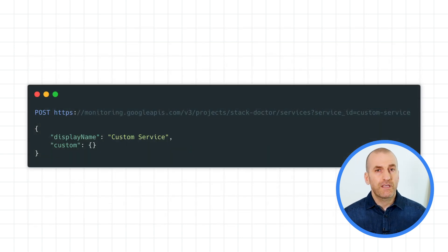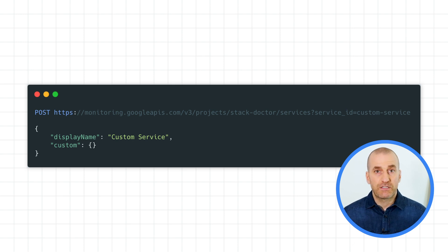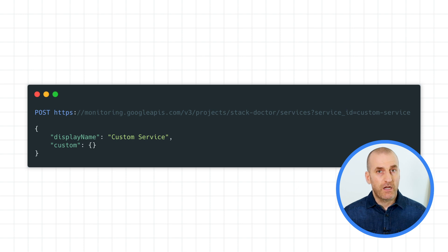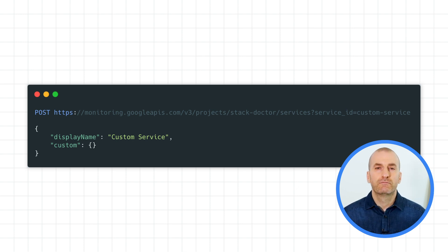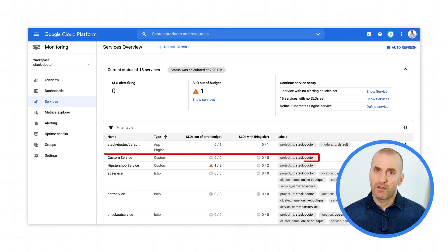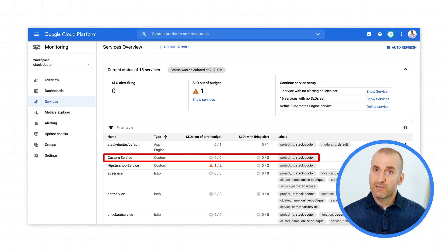To invoke the API, make a POST request to the services endpoint within your project, specifying the service ID as a parameter. The body of the request should contain the name you'd like to see in the UI. Now that the service has been created, you can use the UI to create an SLO against it.